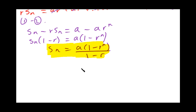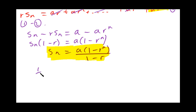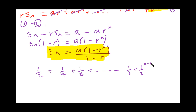Now there is a special version of this formula. Consider the series: a half plus a quarter plus an eighth, and so on. Here A equals a half and R equals a half, so the nth term is a half to the n. We can see the terms getting smaller and smaller. Let's work out what the sum to infinity might be — this is like the problem where you always halve the remaining distance to a point. Do you actually ever get there? That's the question.